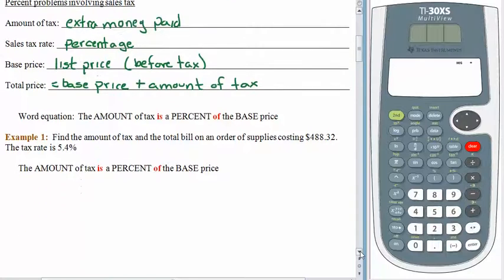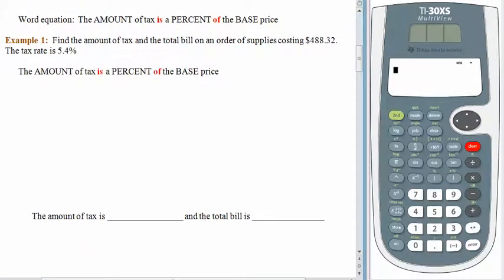Let's just try an example. We need to find the amount of tax and the total bill on an order of supplies costing $488.32. The tax rate is 5.4%. So the first thing you'll notice is that this problem asks two questions. So we need to make sure that we're reading the problem carefully and that our answer completely answers the question that was asked. The amount of tax, is unknown. I'm going to call that x. Is is still equals. The percent, that's 5.4%. And you'll remember we need to write that as a decimal. 5.4% becomes .054. Of means to multiply. And the base, that would be the value of the supplies before tax, $488.32.